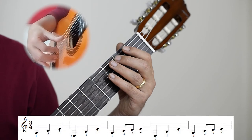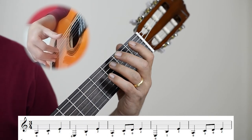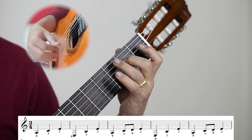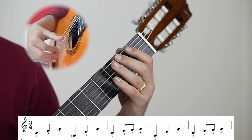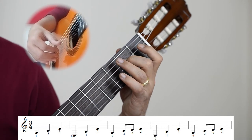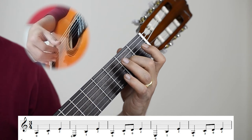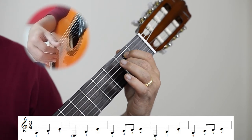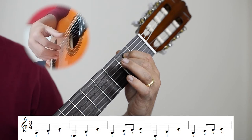Okay, let's start from the first bar. A, C, E. Open, third fret, second fret on the fourth string. Now, you can leave the second finger here and add the first finger to the B.